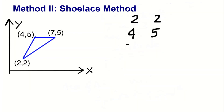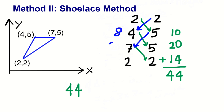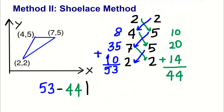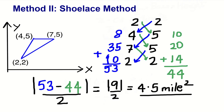First, we write down the x and y coordinates in cyclic order, and write the starting vertex again at the bottom. Then we multiply right in shoelace fashion, and add 10, 20, and 14 to get 44. Then we multiply left, and add 8, 35, and 10 to get 53. Then we take the absolute value of 53 minus 44, and divide by 2, and our answer will be 4.5 miles squared. This shoelace method can be used to calculate the area of any polygon.